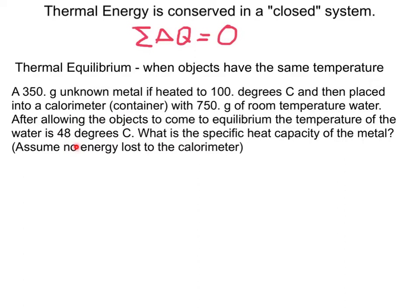Alright, so let me work this problem for you. A 350 gram unknown metal is heated up to 100 degrees Celsius. By the way, that's generally done by placing a metal in boiling water, because boiling water is going to have a temperature of 100 degrees Celsius. Pretty close, 100 degrees Celsius.